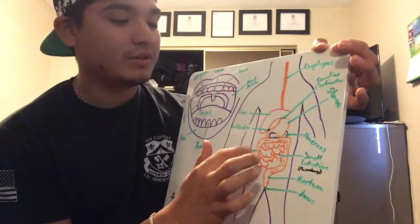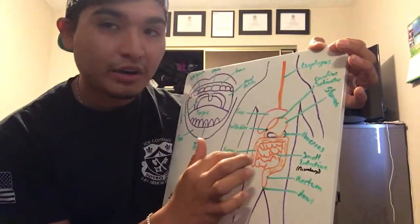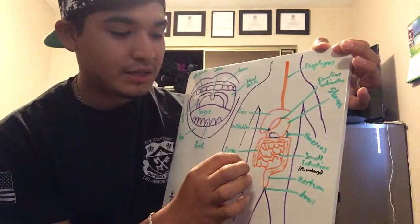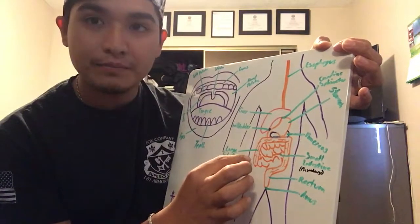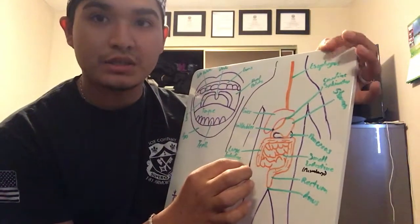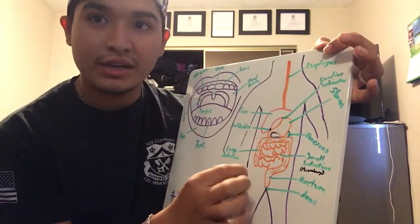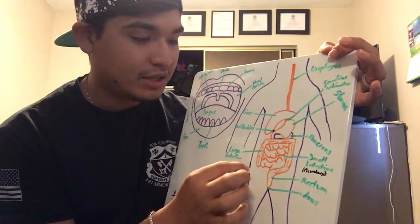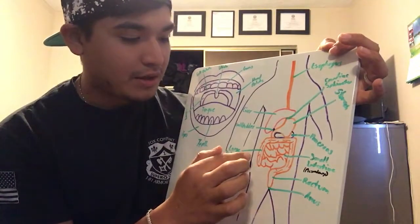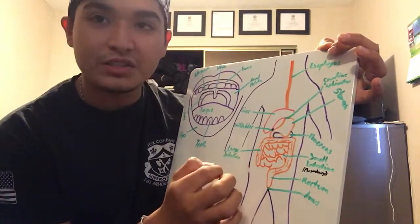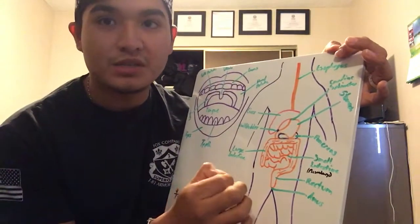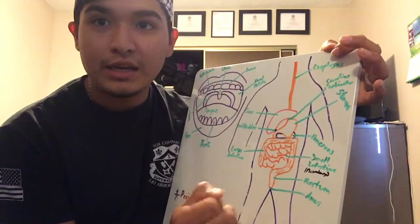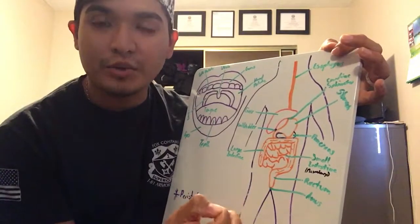Food then goes into the large intestine. It has a cecum, which is what connects the small intestine to the large intestine. The large intestine's main function is to absorb water from the remaining indigestible waste.